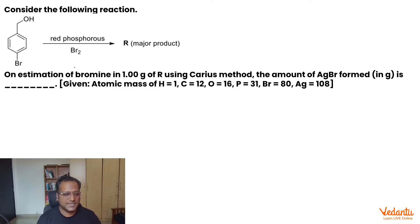Now, the question says, a compound is given to us on reaction with red phosphorus, bromine gives a product R. And then he says, I am estimating R using Carius method. So how much amount of AgBr is formed?